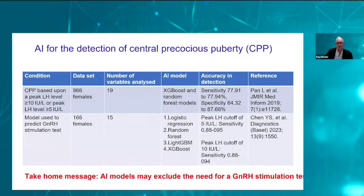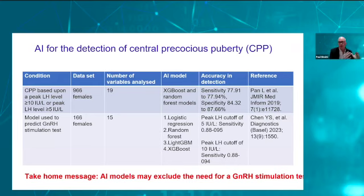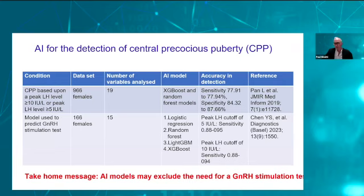AI has also been used for detection of central precocious puberty. In one study, a training set of 1,757 females who either had or did not have central precocious puberty — confirmed by GnRH stimulation test — was used, with 80% in the training set and 20% in the test set. Using models including Random Forest and XGBoost with 19 variables, the AI detected central precocious puberty with a sensitivity near 80%. The three variables with highest predictive value were baseline LH, FSH, and IGF-1.